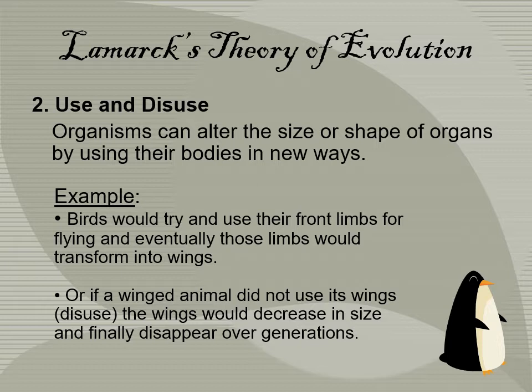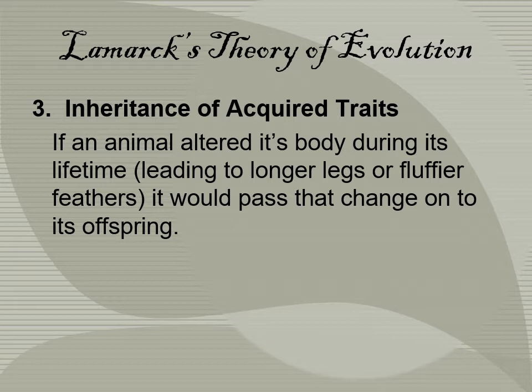If a winged animal did not use its wings — disuse — the wings would decrease in size and eventually disappear over generations. You can see here that this is a penguin. The penguin is a notable example because it still 'flies' — it just flies underwater, using its wings to swim. According to Lamarck's theory, since the wings aren't being used for flying, they would eventually disappear, but the penguin's wings are still going strong because the way of flying has changed.